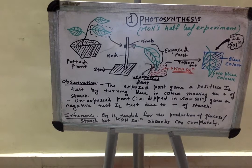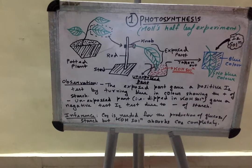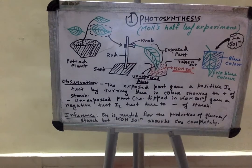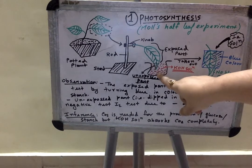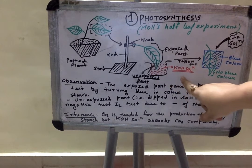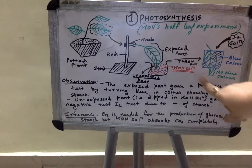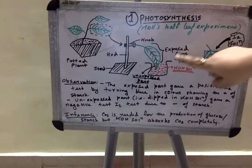The diagram is self-explanatory, but I would like to explain it briefly. Select a healthy potted leaf and tie it with a knob supported by a rod and stand, and dip half portion of this leaf into a KOH solution, that is potassium hydroxide solution, and the rest of the part is exposed.